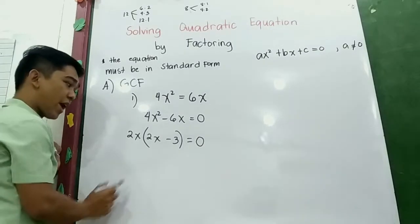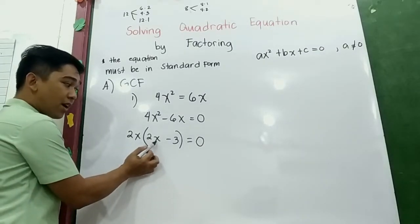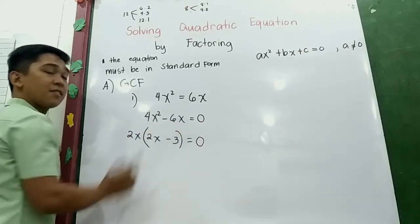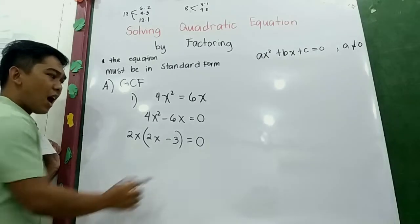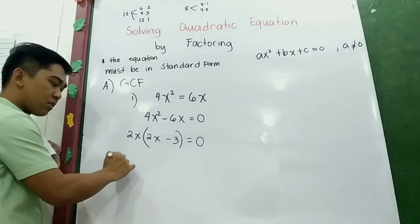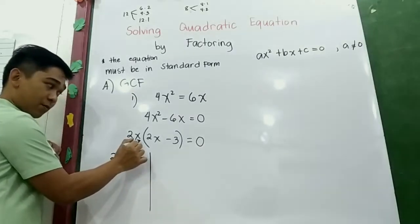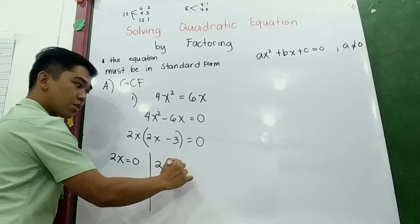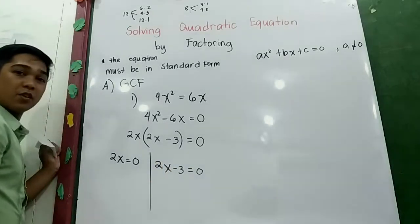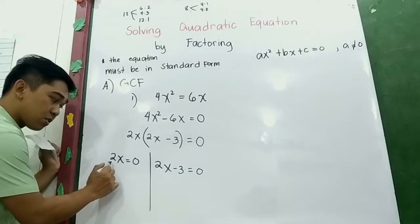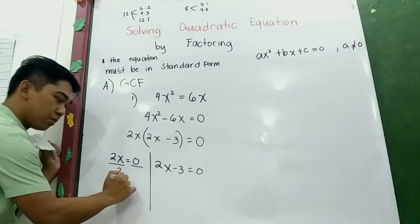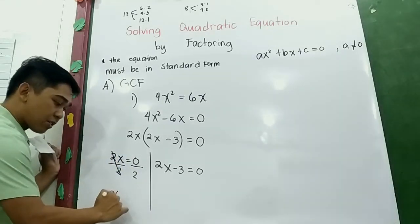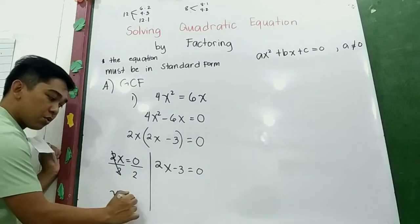So our factored form is 2x(2x − 3) = 0. You can check if your factors are correct: 2x times 2x is 4x², and 2x times negative 3 is −6x. Correct! Now equate each factor to zero: 2x = 0 gives x₁ = 0 divided by 2, so x₁ = 0.